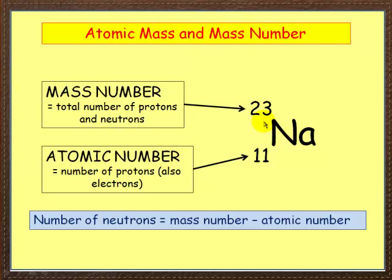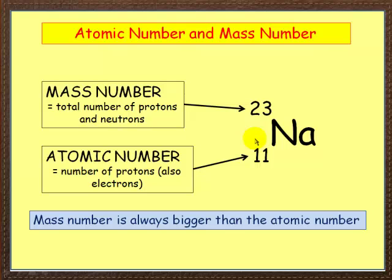Now we can work out the number of neutrons by subtracting these two figures. If you want to work out how many neutrons there are in sodium, you subtract 11 from 23. The mass number is always bigger than the atomic number because there are neutrons — though just to note, for hydrogen it's one and one, but that's just one exception.